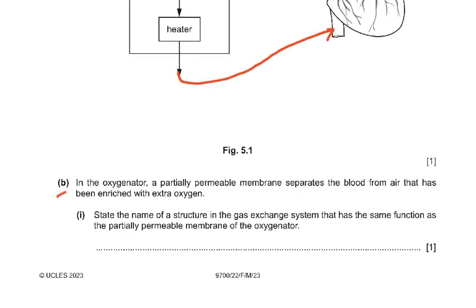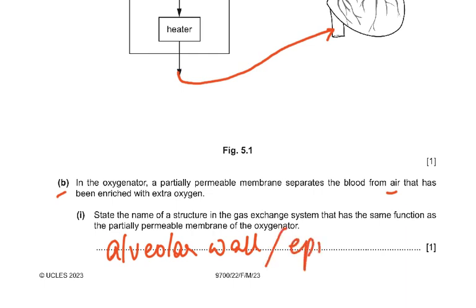For part B: in the oxygenator, a partially permeable membrane separates the blood from air enriched with extra oxygen. The structure in the gas exchange system with the same function as this membrane is the alveolar wall, or alveolar epithelium — even squamous epithelium, which lines the wall of the alveoli. All of these would be correct answers.